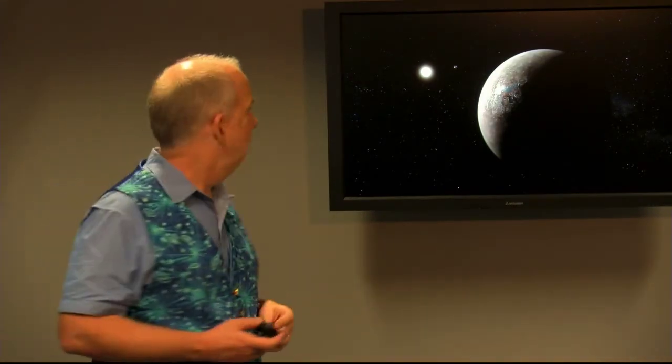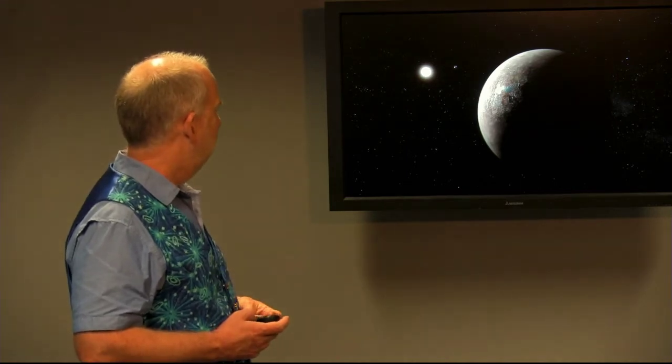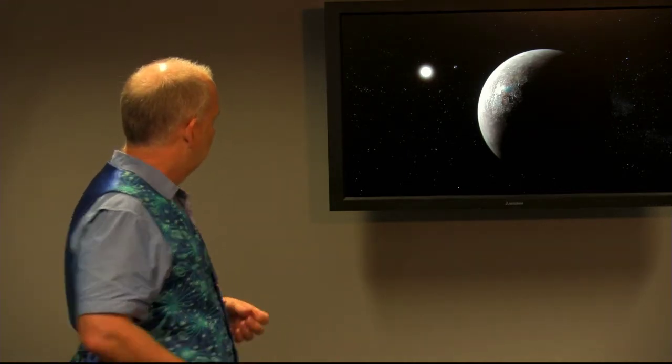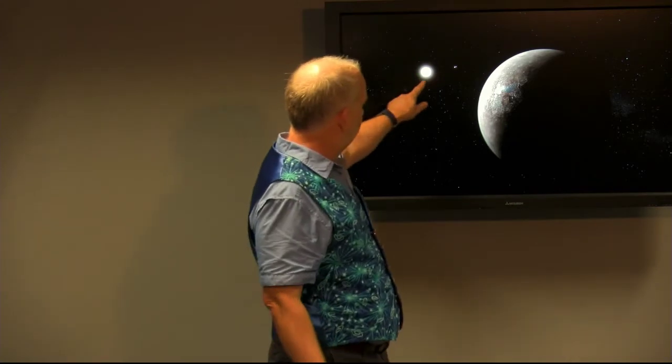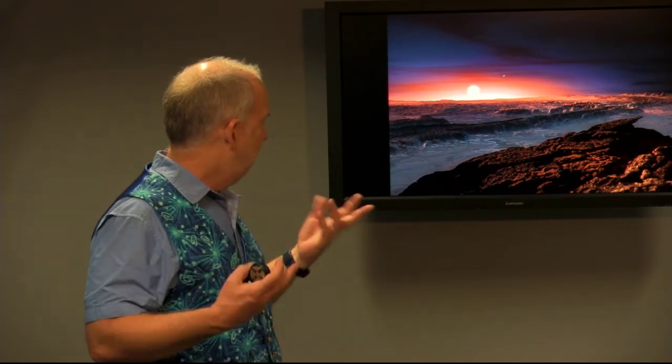Of course, that doesn't stop us doing artist's impressions. Here's an artist's impression. You can see they've made the planet rocky with oceans, and you've got the star Proxima Centauri, and in the distance Alpha Centauri A and Alpha Centauri B. And here again is a hypothetical view on the surface, once again with Proxima and Alpha A and B in the background. And they've guessed that it's a rocky planet with some sort of thin atmosphere, but that's a complete guess. We have absolutely no idea.